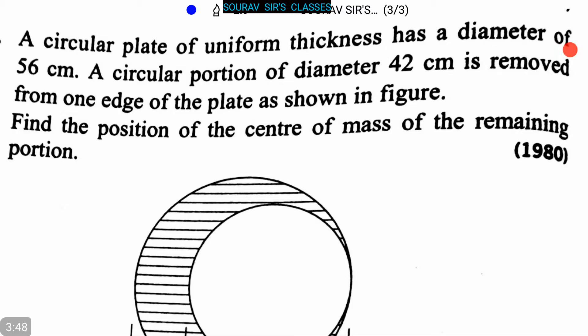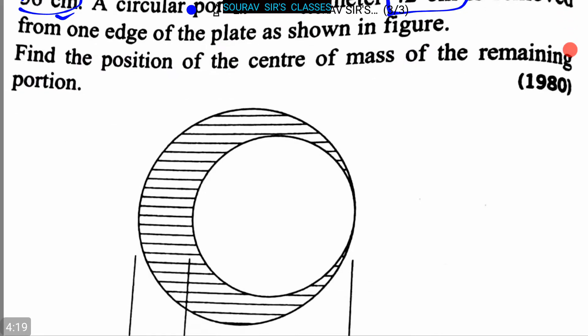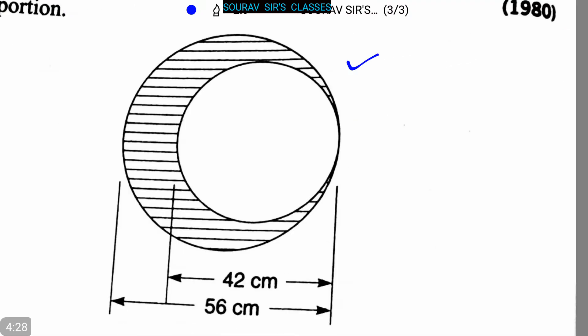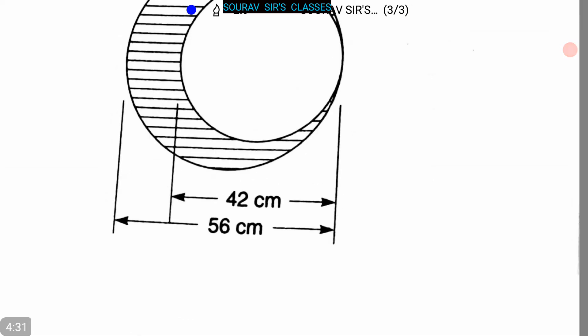Now let's proceed to the next question. The question is: A circular plate of uniform thickness has a diameter of 56 centimeter. A circular portion of diameter 42 centimeter is removed from one edge of the plate as shown in the figure. We have to find the position of the center of mass of the remaining portion.